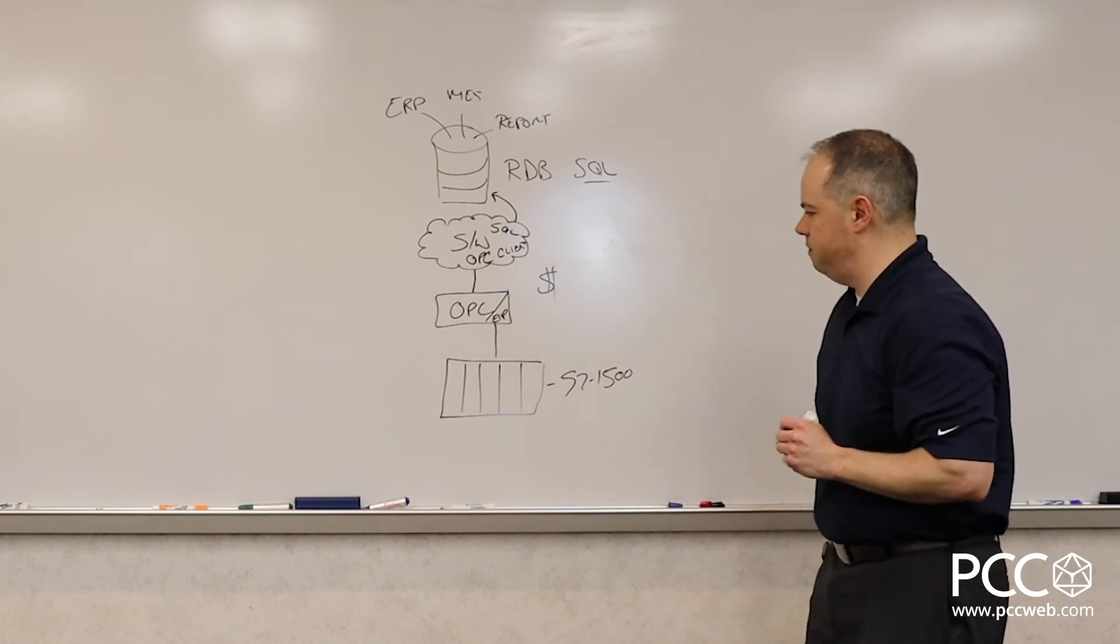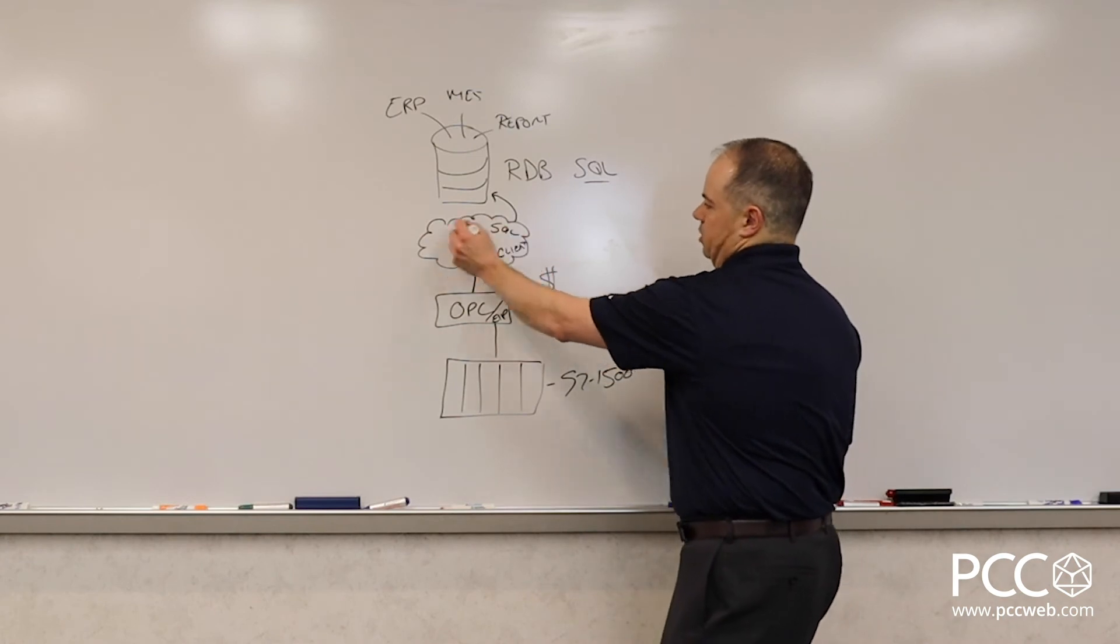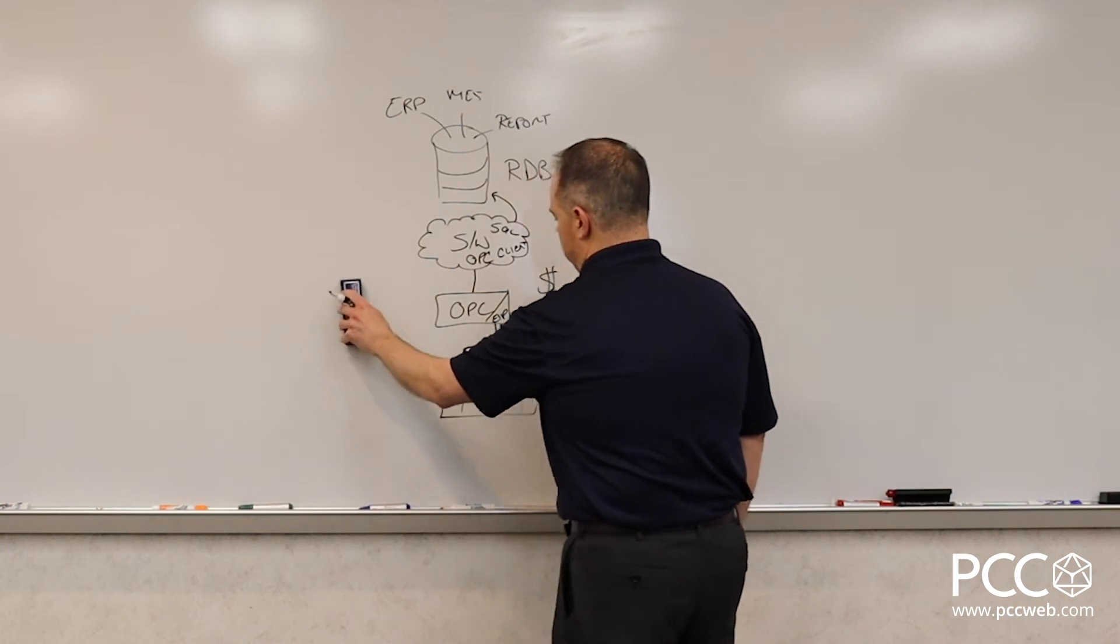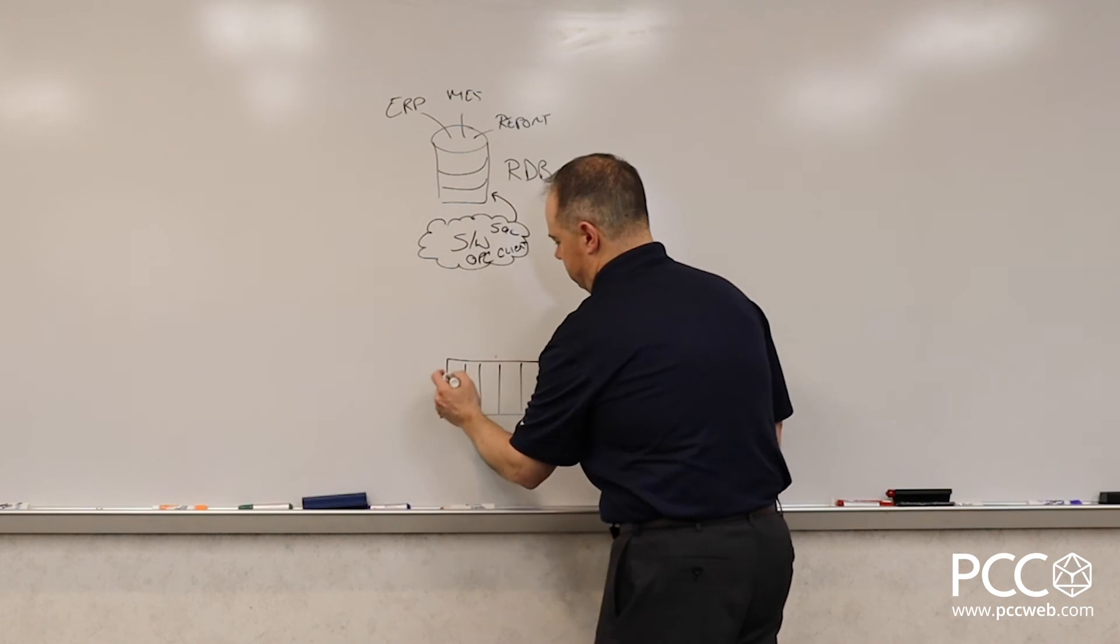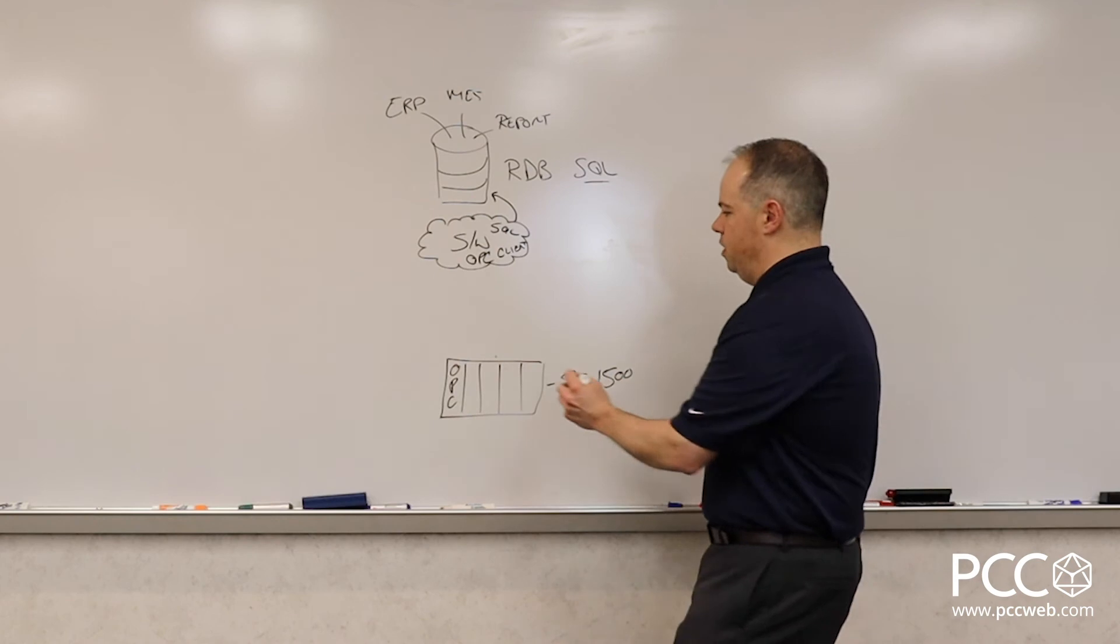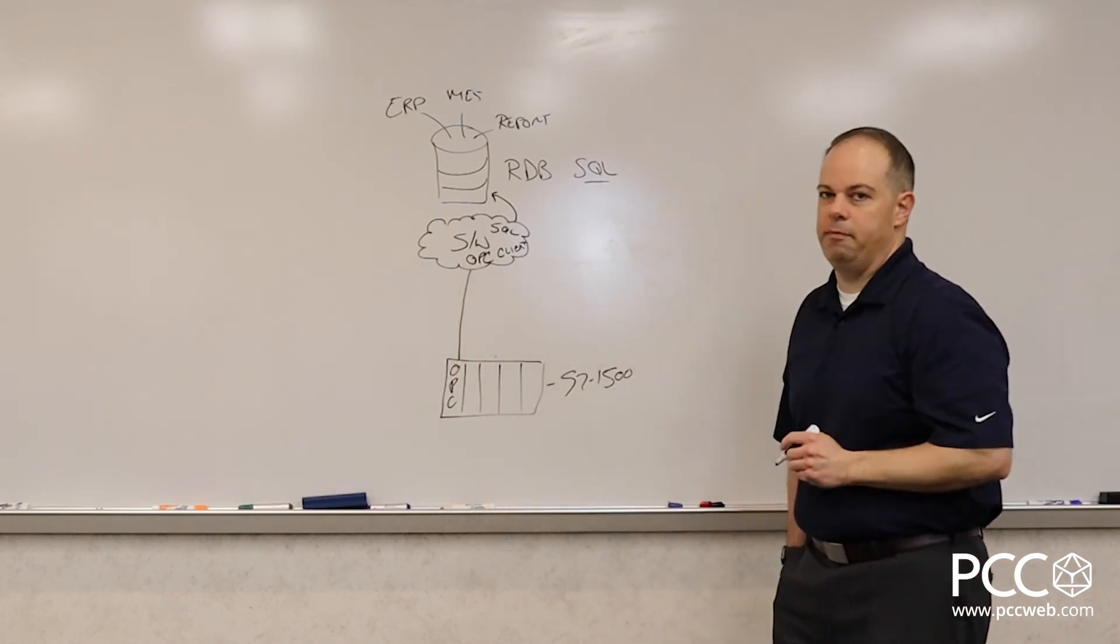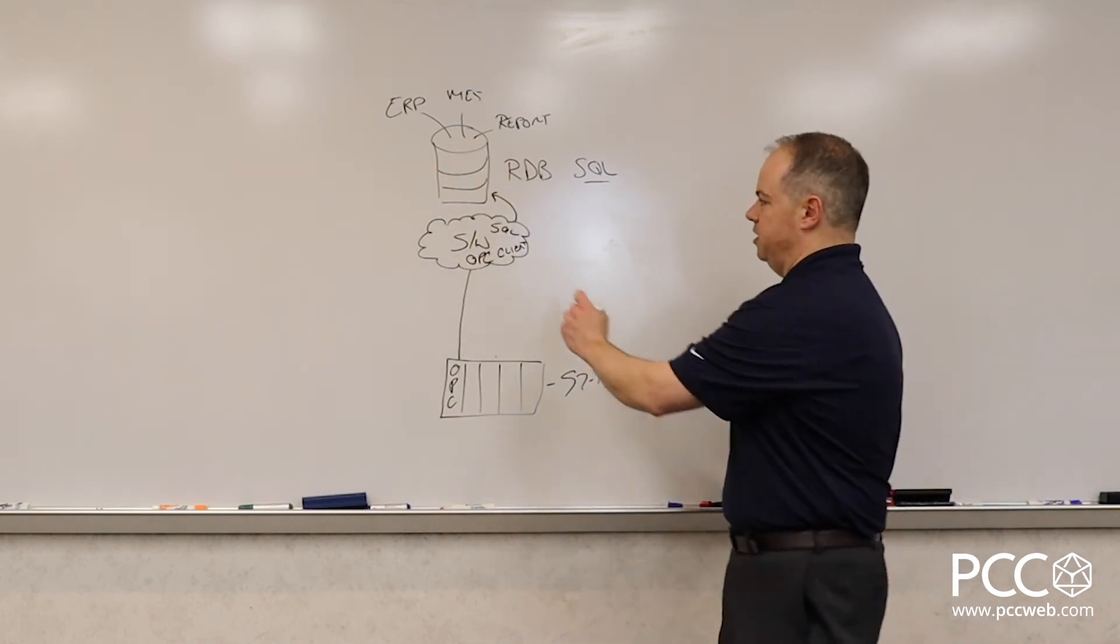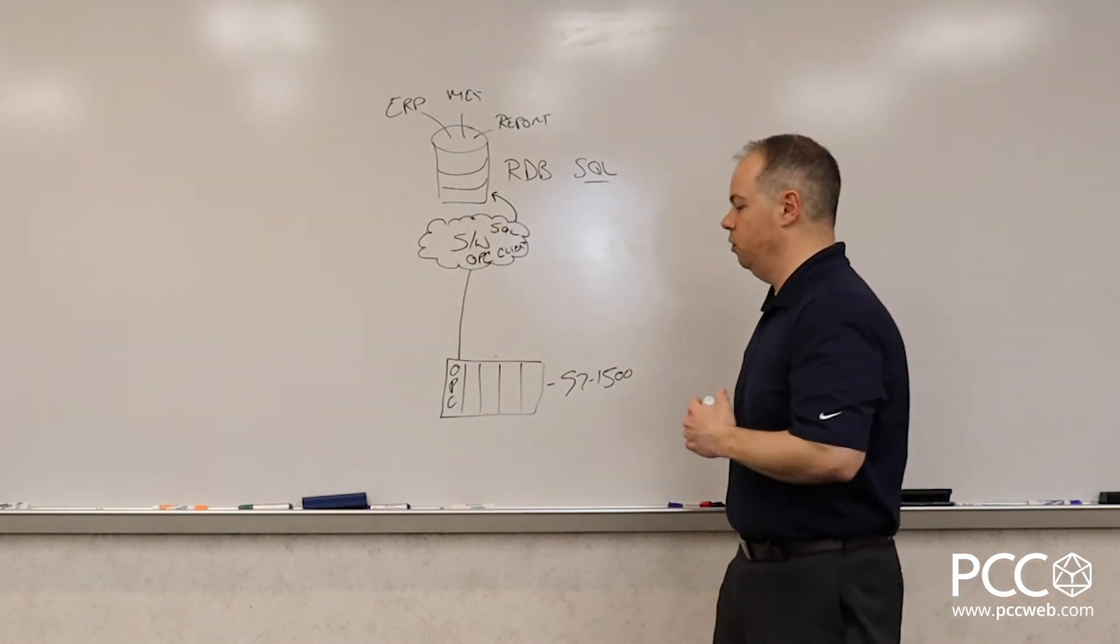So we've got our S7-1500 PLC now introduced into the application. And let's say we're still using our software solution. Well, the first thing that we can do here is we can eliminate the need for an OPC server because the PLC is your OPC server. So now I can go directly from this PLC up to my OPC client, my middleware piece of software, which then talks to the database. And sometimes this is an acceptable solution because this software might be doing more functionality than just speaking with the database.